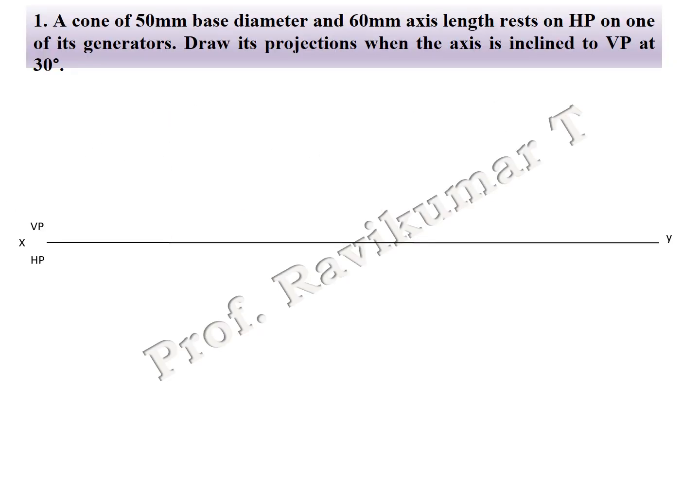If you're looking from the top of an object, the cone is visible like a circle, but if you're looking from the front, the cone is visible like a triangle. The problem: a cone of 50 mm base diameter and 60 mm axis length rests on HP.